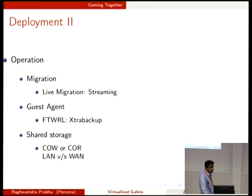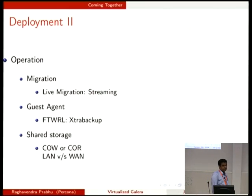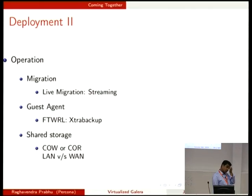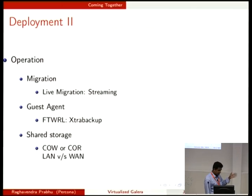One more thing is shared storage. Suppose you have storage shared between multiple hardware nodes and you'd like the same state — cloning. If you have something like a NAS between the nodes, you can go for copy-on-write or copy-on-read, which is supported in QEMU, based on whether it's a LAN or WAN. Since with synchronous replication latency matters, you need to choose appropriately between them.